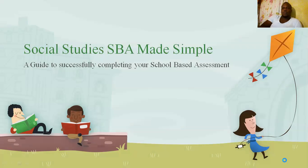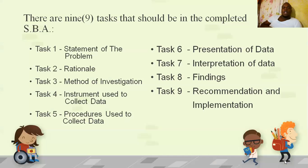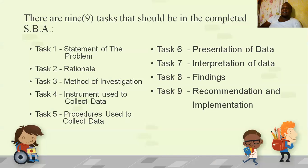Let's get started with the Social Studies SVA. There are nine tasks that should be completed. One: statement of problem. Two: rationale or reason for selecting area of research. Three: method of investigation. Four: instruments used to collect data. Five: procedures for data collection. Six: presentation of data. Seven: interpretation or explanation of data. Eight: findings. Nine: recommendation and implementation strategy.